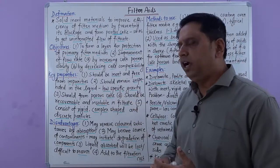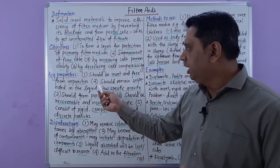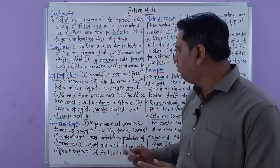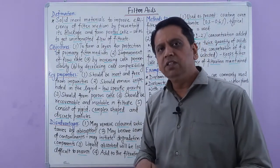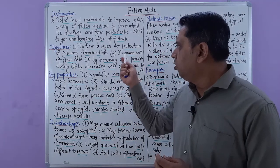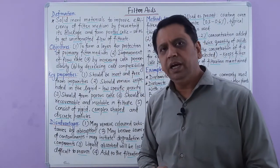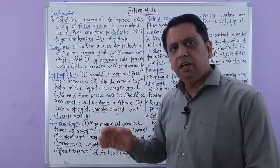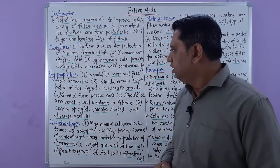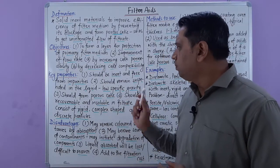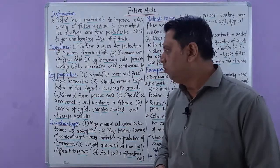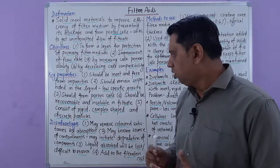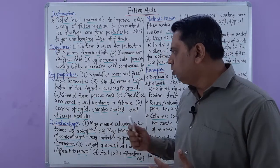The key properties of filter aids: first, it should be inert and free from impurities. Second, it should remain suspended in the liquid — it should have a low specific gravity, otherwise it will settle down and form a non-compressible cake over the filter medium, slowing down the rate of filtration. Third, it should form a porous cake.